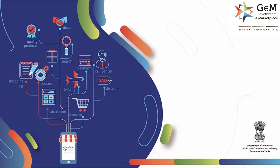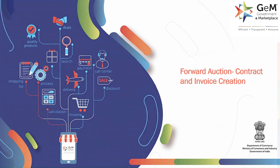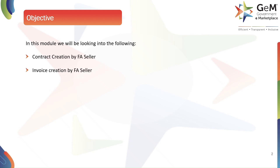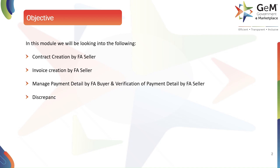Namaskar, welcome to the Government e-Marketplace. Today we will learn about forward auction contract and invoice creation. This video will guide you through the process of managing your contracts and creating invoices as a forward auction (FA) seller. In this module we will be looking into: contract creation by FA seller, invoice creation by FA seller, manage payment detail by FA buyer, and verification of payment detail by FA seller, and discrepancy invoice.